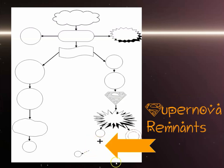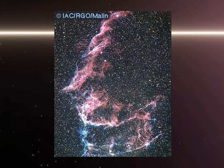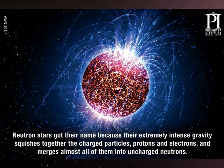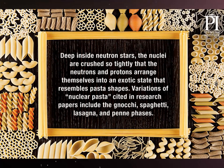In your notes, write 'supernova remnants.' Similar to how a planetary nebula has a central white dwarf, a neutron star is very small and hard to pick out within supernova remnant images. Neutron stars got their name because intense gravity squishes together protons and electrons, merging almost all of them into uncharged neutrons. Deep inside, the nuclei are crushed so tightly that neutrons and protons arrange into exotic states resembling pasta shapes — variations cited in research papers include gnocchi, spaghetti, lasagna, and penne phases.